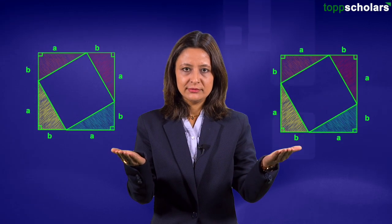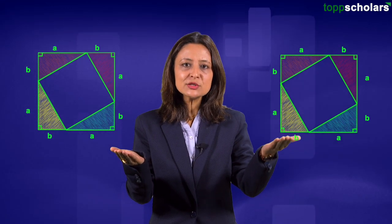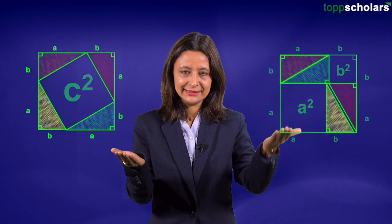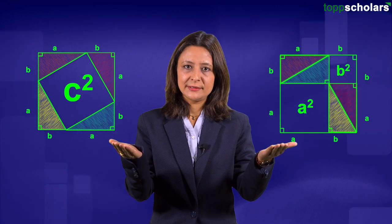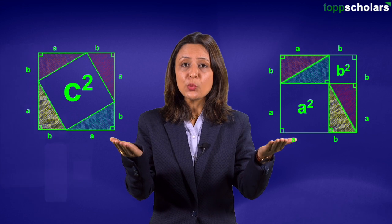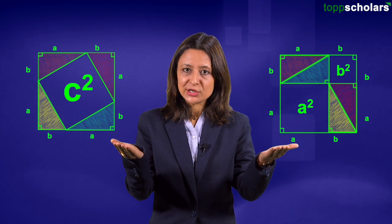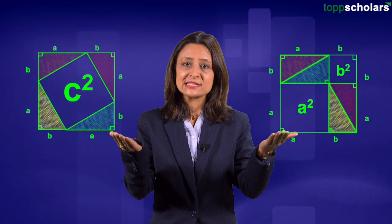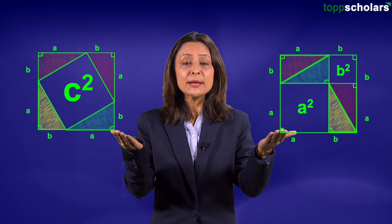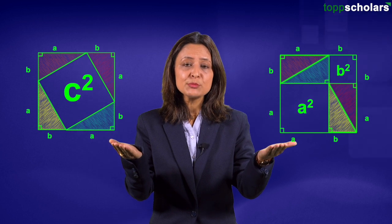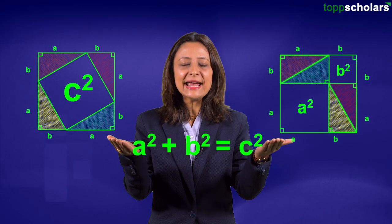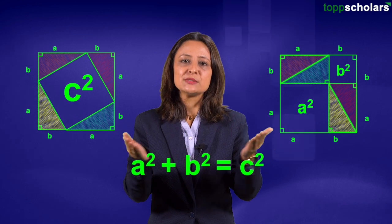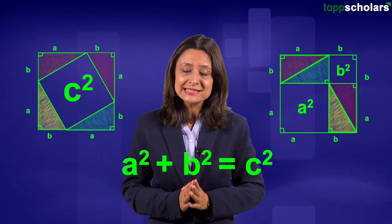Now let's make a copy of this square and arrange the triangles like this. Observe both the figures. Since the original square has not changed and the triangles are also the same, the area of empty spaces between both the figures is also the same, giving us A square plus B square is equal to C square.